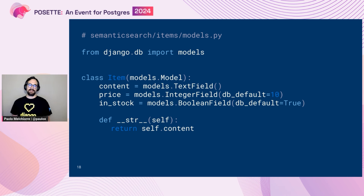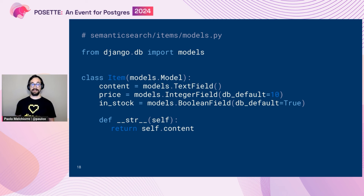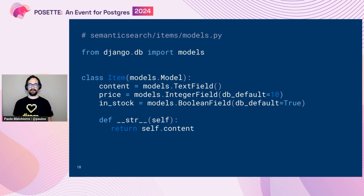The apps listed before are all from Django itself and are useful for having the admin, sessions, and other fundamental parts of our project. After this initialization, we can start writing real code. I decided to create an Item model — a simple example with textual content. I declared all the fields I needed inside the class: a price integer field with a default, a stock Boolean field with True as default, and a string representation returning the textual content.